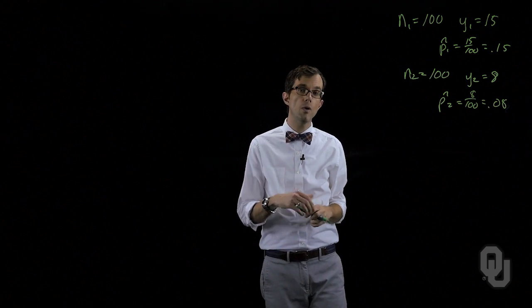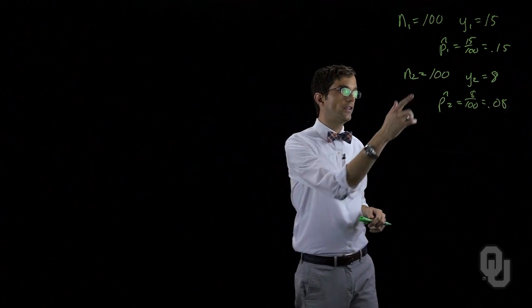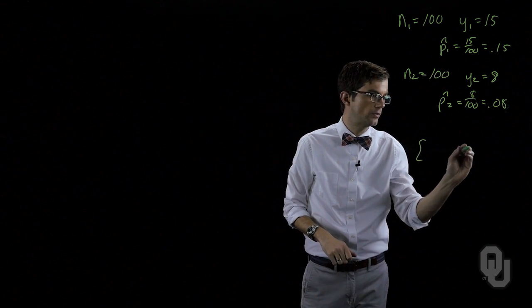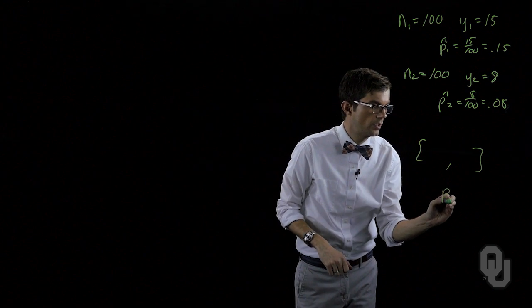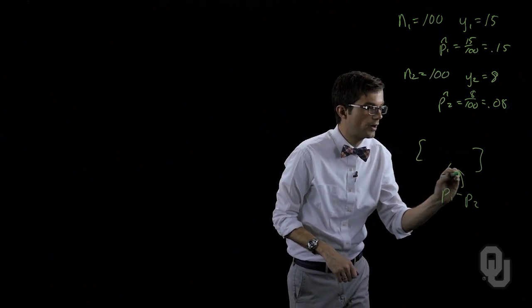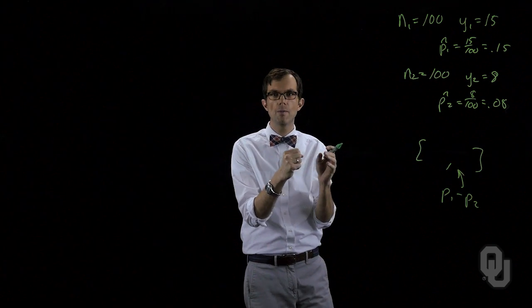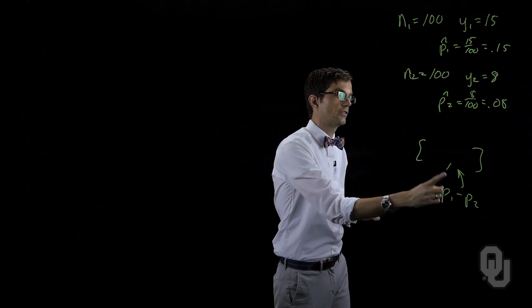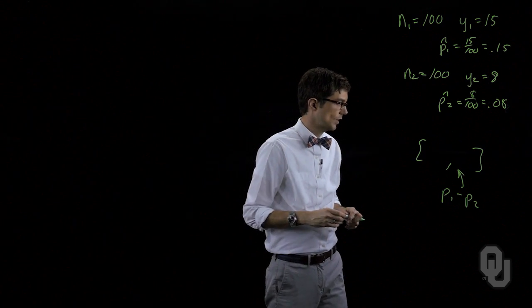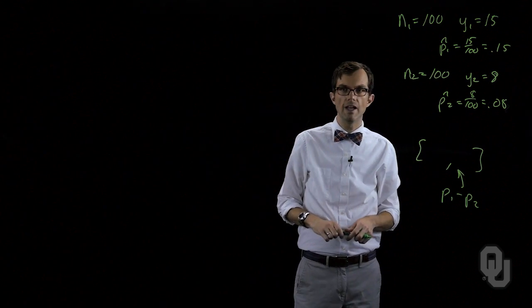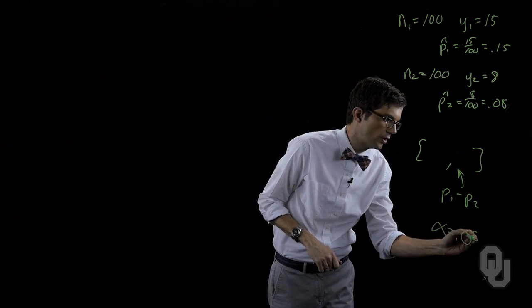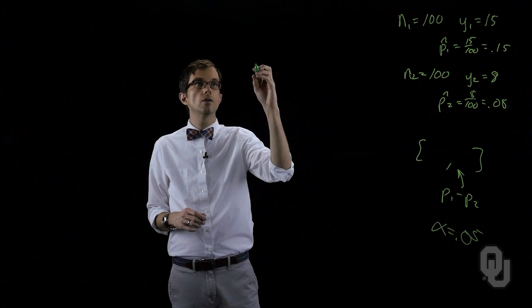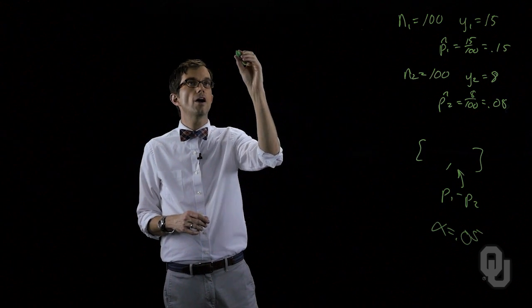And so we want a confidence interval for the difference in population proportions. We want a confidence interval that tells us somewhere in there we are some amount of confidence that this true difference in proportions lies. So let's say we want to be ninety five percent confident. That says that alpha is point oh five. So what is our equation for the confidence interval?